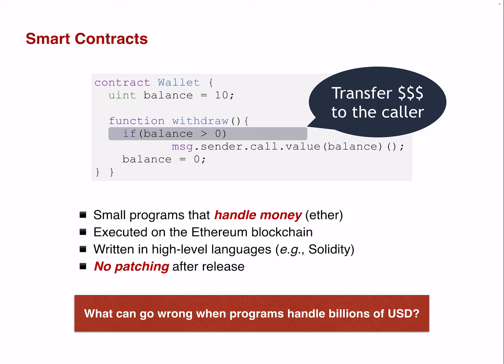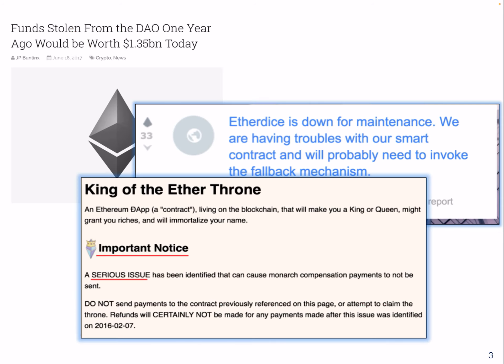An important characteristic of such a program is it cannot be patched. Once a contract is deployed at a particular address, it's persistent and cannot be modified. There is a possibility to destroy a contract, but if someone has the authority to destroy a contract, you might not want to interact with it — otherwise you might actually incur a loss, depending on the exit condition of the smart contract.